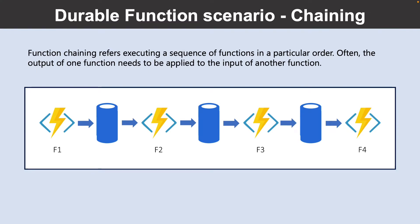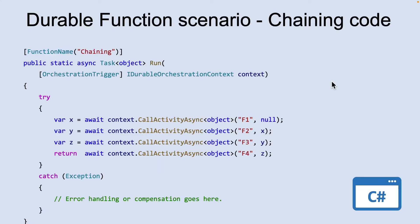Let us look into a Function scenario called Chaining. Function Chaining refers to the pattern of executing a sequence of functions in a particular order. Often, the output of one function needs to be applied to the input of another function. The second scenario is Chaining code.